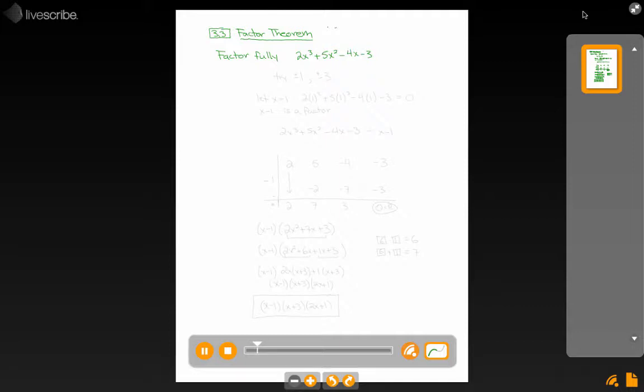If we know our theorems, our integral zero theorem tells us that if x minus a is a factor, the numbers a that I need to try are going to be factors of this constant term 3. So really the only numbers I need to try are plus or minus 1 or plus or minus 3, and I should run into a factor of this polynomial.